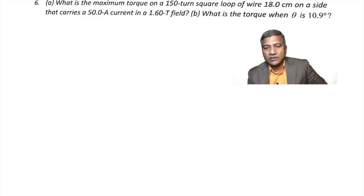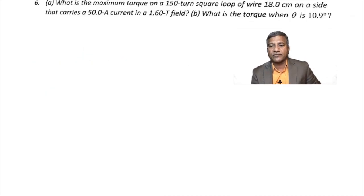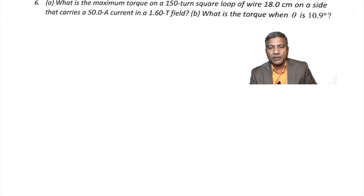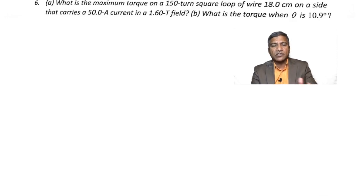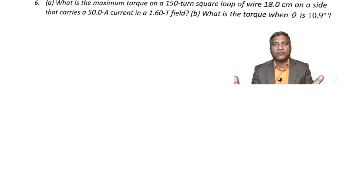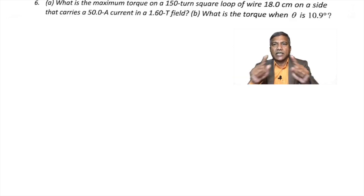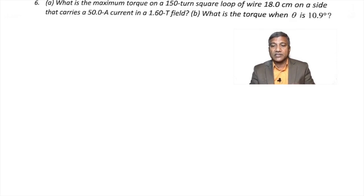Question 6: What is the maximum torque on a 150-turn square loop of wire, 18 cm on a side, that carries 50 amperes in a 1.60 Tesla field? Part B asks for the torque when θ = 10.9 degrees. This involves a current-carrying square loop in a magnetic field — forces act on opposite sides in opposite directions, creating a torque that tends to rotate the loop.